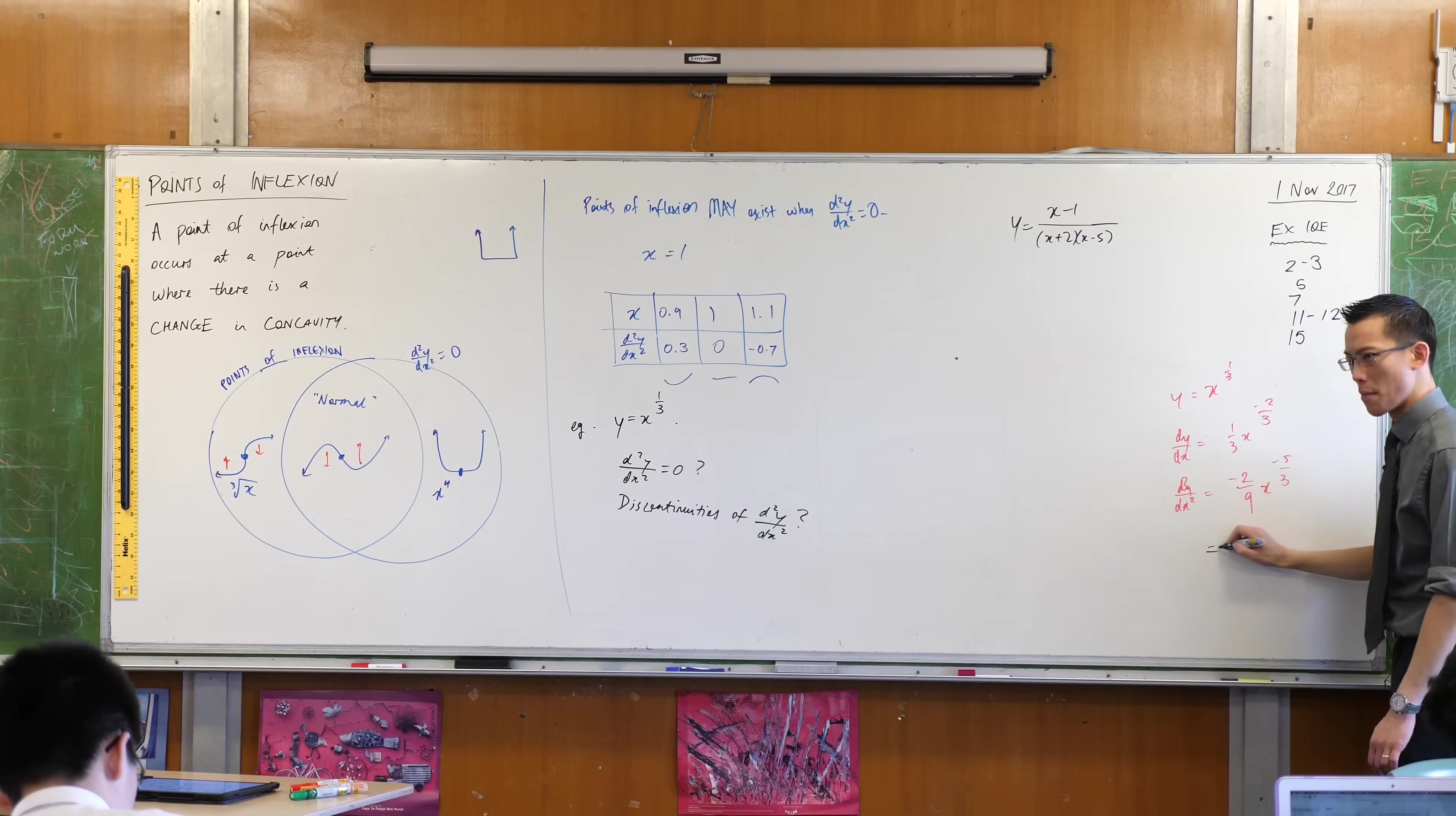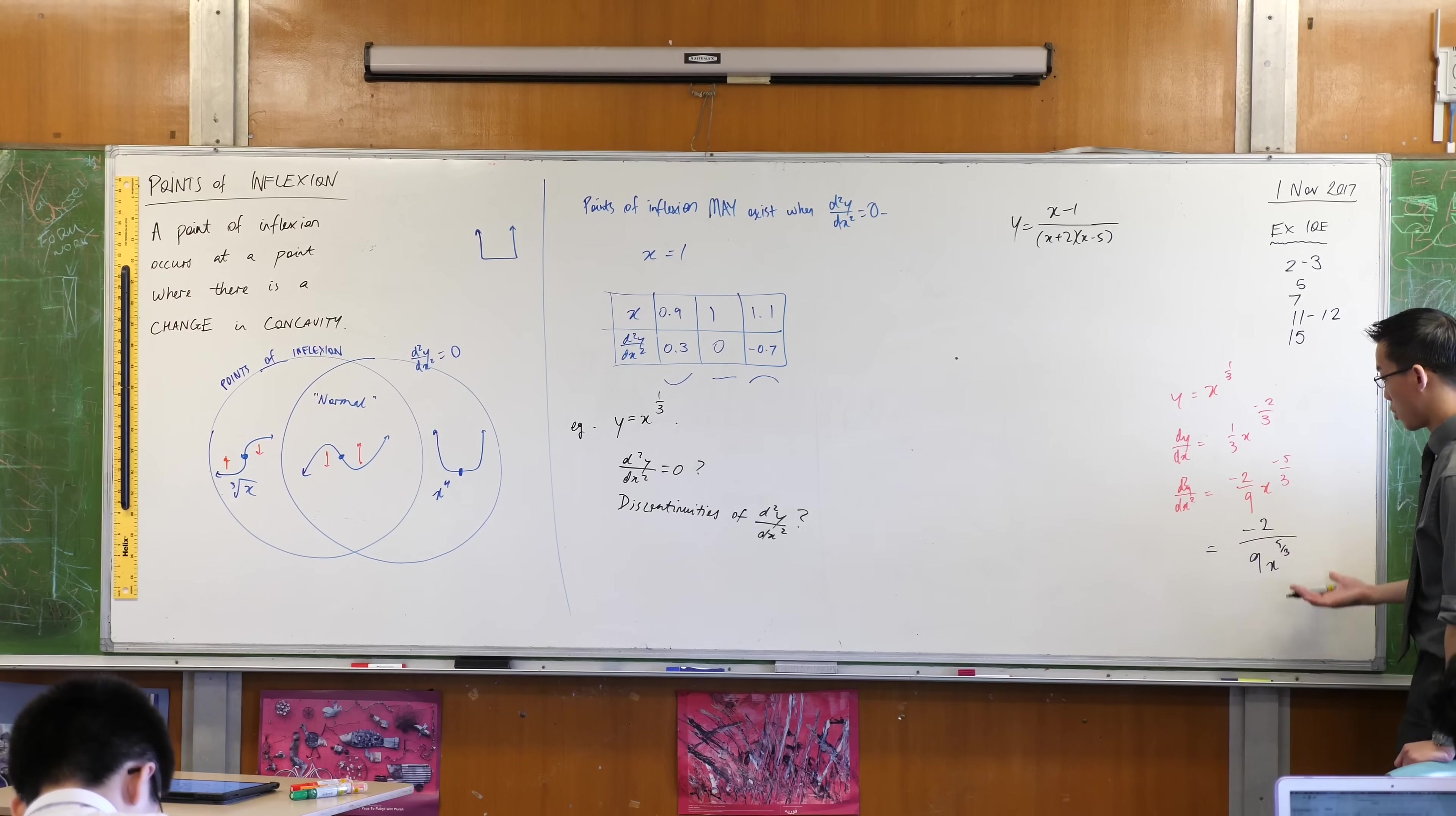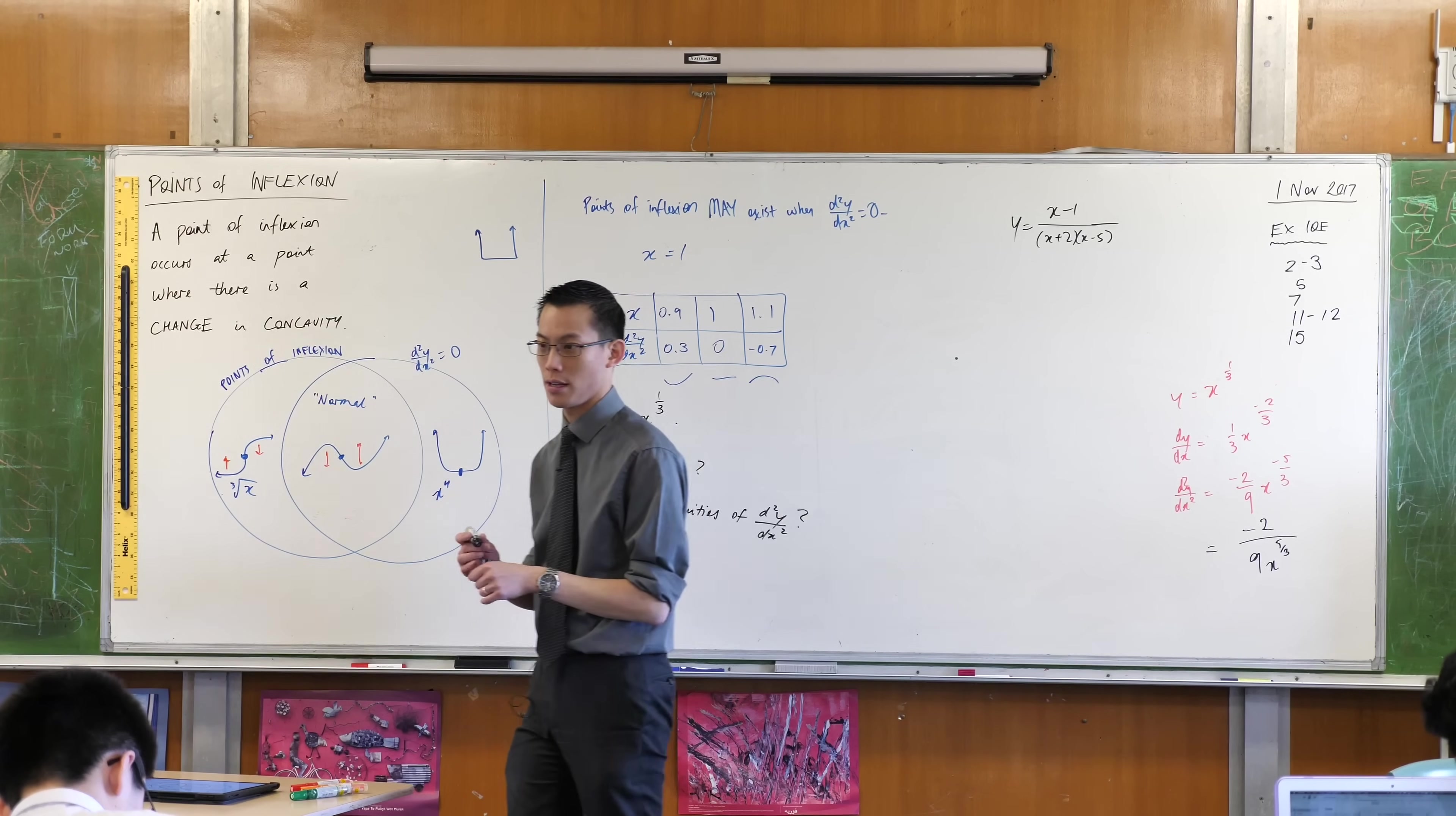Well, this thing here is written in a bit of a messy form. This is minus two over nine x to the five on three. So clearly x equals zero might not give me a second derivative, but it does give me a discontinuity that makes me suspicious. Something might happen here.